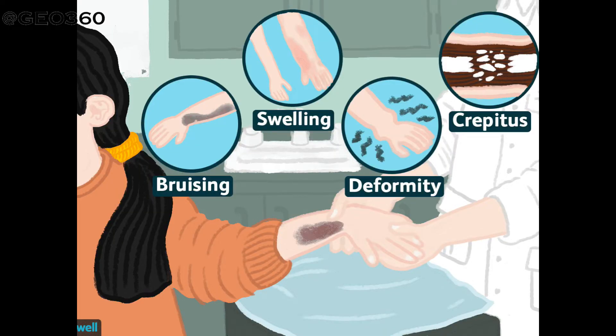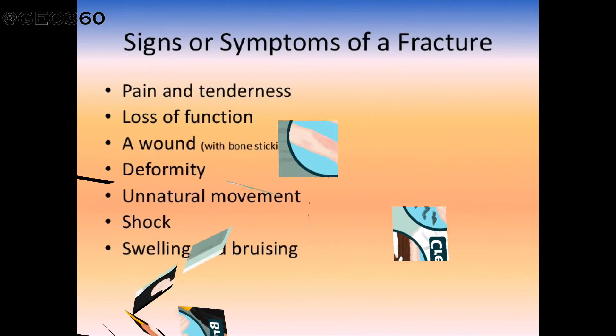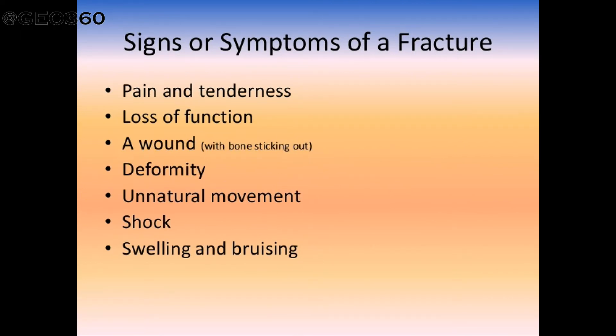In case of a fracture, the following signs and symptoms may be observed. The injured person complains of pain at or around the fracture site, and tenderness — that is, pain on touching over the injured area. Never press hard on a suspected fracture spot. There might be swelling of the area around the fracture.